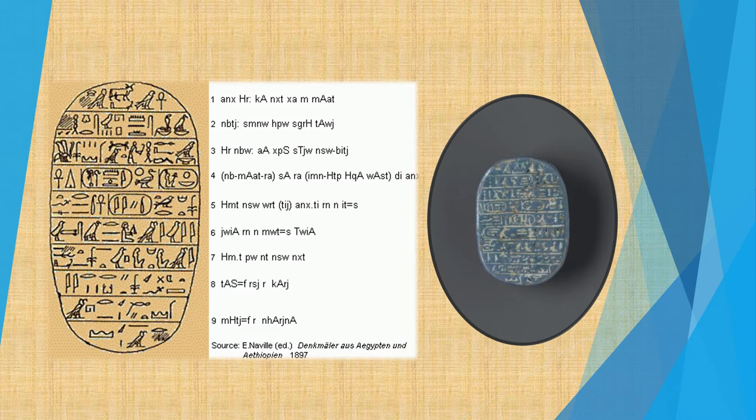The name of her father is Juya, the name of her mother is Tejia. She is the wife of a mighty king, whose southern border is as far as Haroi, and the northern as far as Naharim.